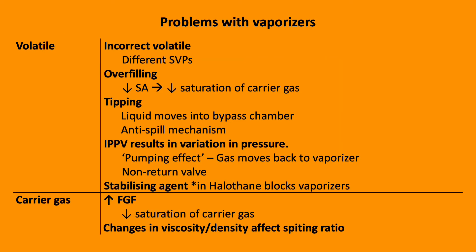Problems with vaporizers — this is not an exhaustive list. Issues include: incorrect volatile in a vaporizer; overfilling, which reduces surface area and therefore reduces saturation of the carrier gas; tipping of the vaporizer, which may cause liquid to move into the bypass chamber increasing output — reduced by an anti-spill mechanism; IPPV causing pressure variation and gas moving back into the vaporizer, known as the pumping effect — reduced by a non-return valve; halothane contains a stabilizing agent which can block vaporizers; and high fresh gas flow levels may reduce saturation. Changes in viscosity and density of the carrier gas may also affect splitting ratios.